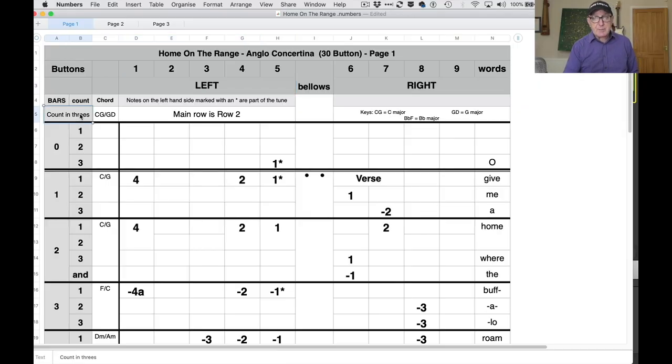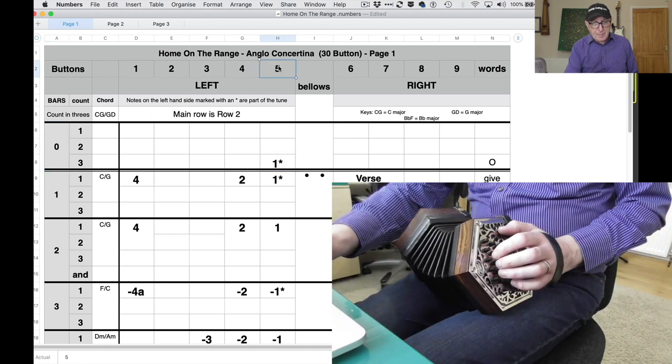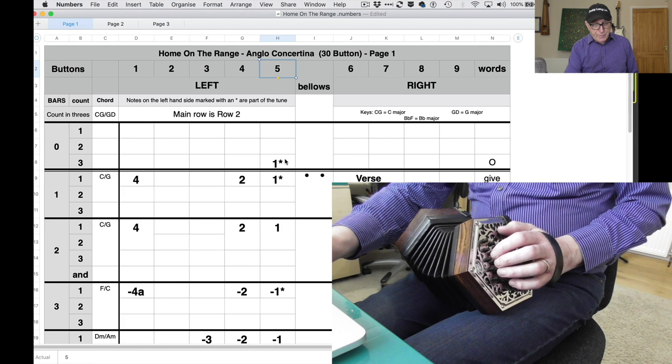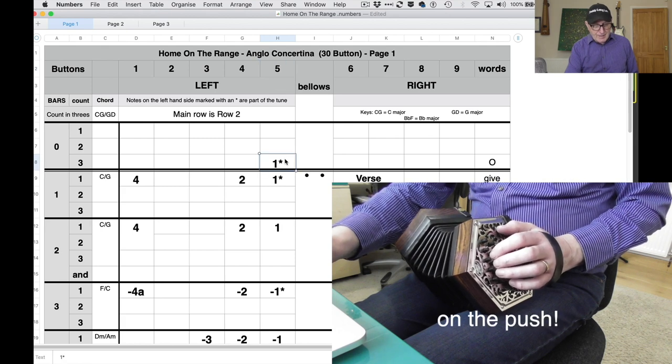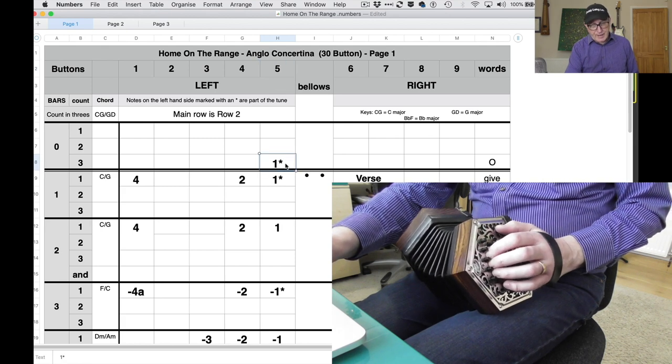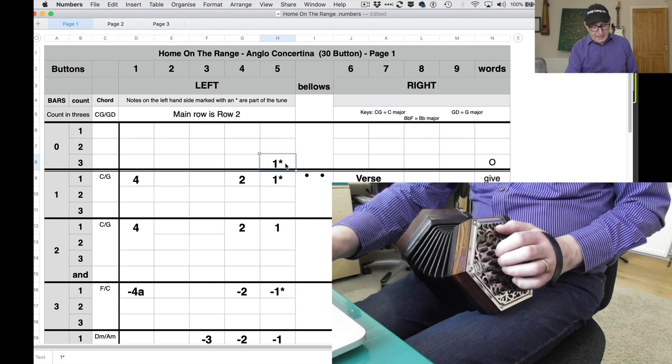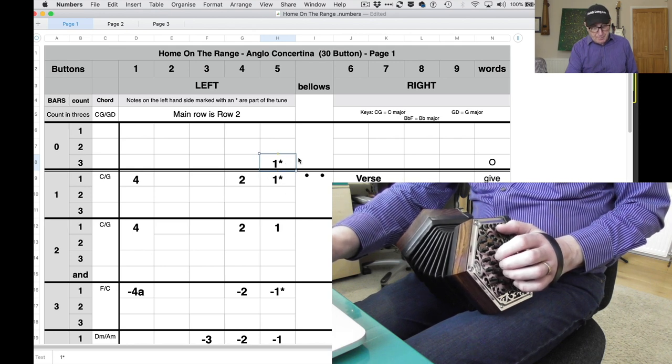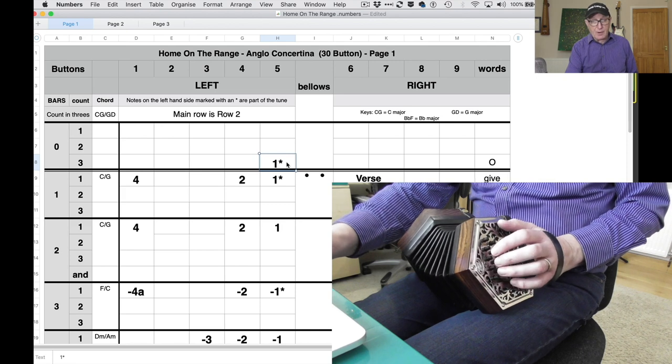It's an American folk song. It's got some great words, so let's make a start. So it says over here counting threes because it's a waltz, and the first bar is bar naught. That means to say that it's a pickup bar, not a full bar. You come in on beat three. On the left hand side, button five, it's finger one, and it's main row, because if it's accidental row I put an A, and if it's on row one I put a thick border around it.